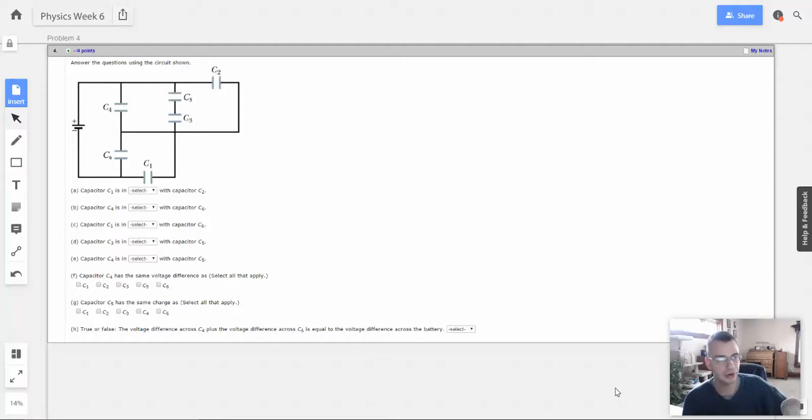Week 6, problem 4. Answer the questions using the circuit as shown. Capacitor C1 is in blank with capacitor C2.